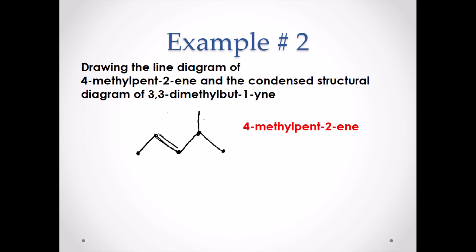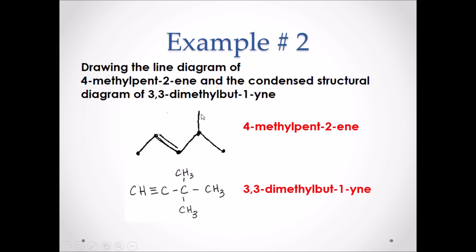For our condensed structural diagram, starting at the back of the name, we have bute-1-yne, meaning we have a four-carbon chain: one, two, three, four. Our triple bond is coming off the first carbon in the chain. We then have dimethyl — two single carbon branches — both coming off the third carbon in the chain: one, two, three. Here's one methyl branch, and here is the other methyl branch. Remember, a condensed structural diagram only shows the carbon-carbon bonds.